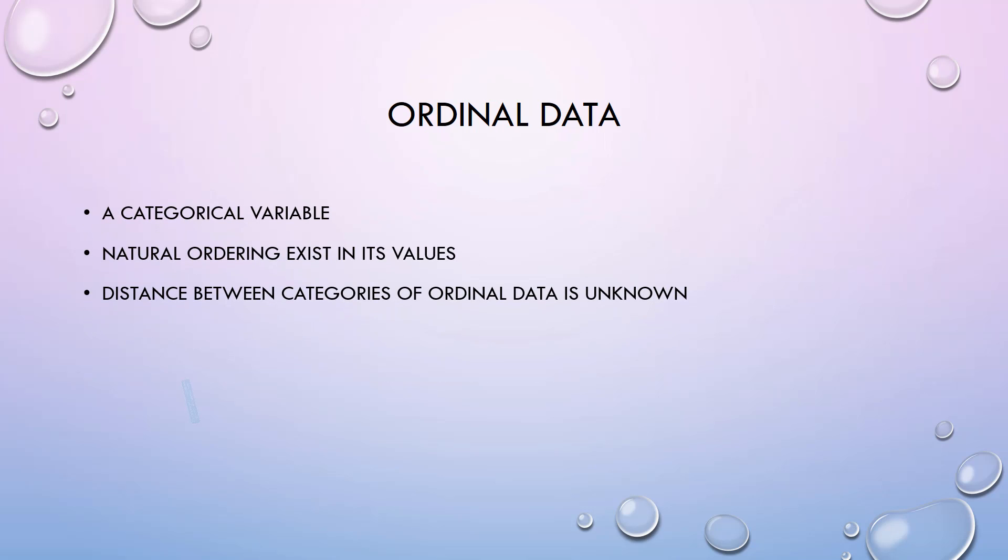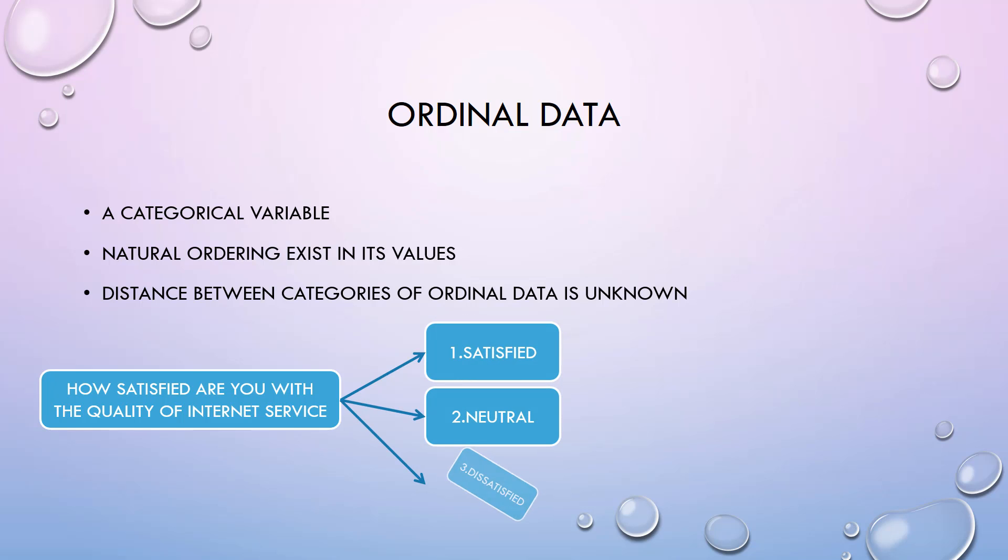Ordinal data is a subcategory of the categorical data. When there is an ordering of categories, that variable is called ordinal. For example, in a survey on the quality of the internet service, subscribers can choose one of three options: satisfied, neutral, and dissatisfied.